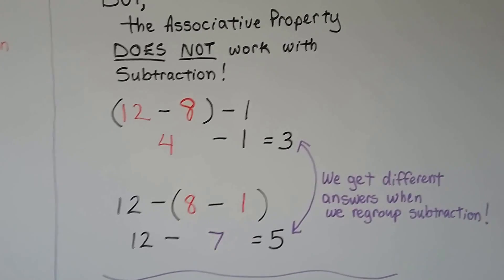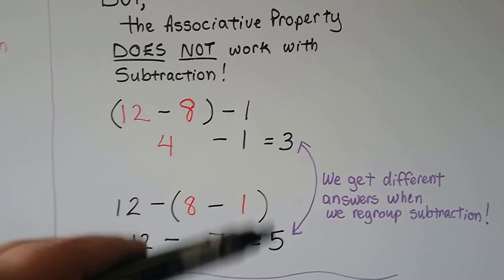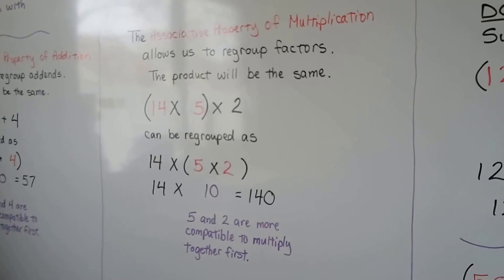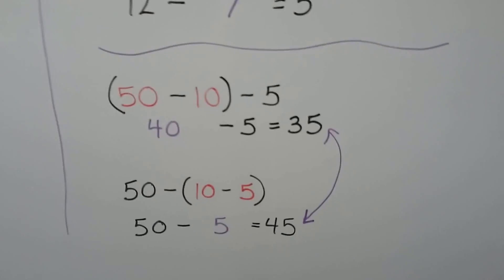Associative property does not work with subtraction. We're going to get a different answer. For addition and multiplication, we got the same answers. We'll try it again.